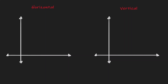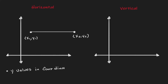Let's consider a horizontal line. Let's call this point x1, y1 and let's call this point x2, y2. One thing to consider is that in horizontal lines the y values of the coordinate points don't change. So instead of calling this y1 and y2, let's just call both of them y.